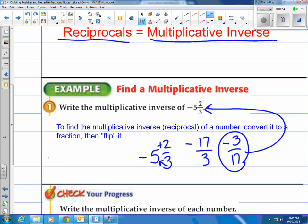There is the multiplicative inverse of this number -5 and 2/3. And again what that means is -5 and 2/3 multiplied by -3/17 will equal 1. If you have a calculator handy you can try that using your ABC button.